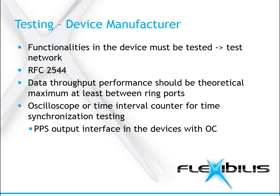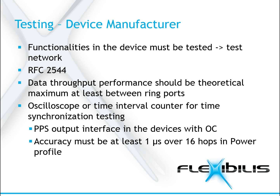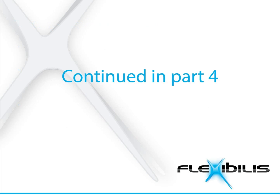The power profile requires the synchronization accuracy to be 1 microsecond over 16 hops. This is the end of the third part — please continue to the fourth one, in which I will tell more about the different node types in HSR and PRP networks. Thank you for watching!